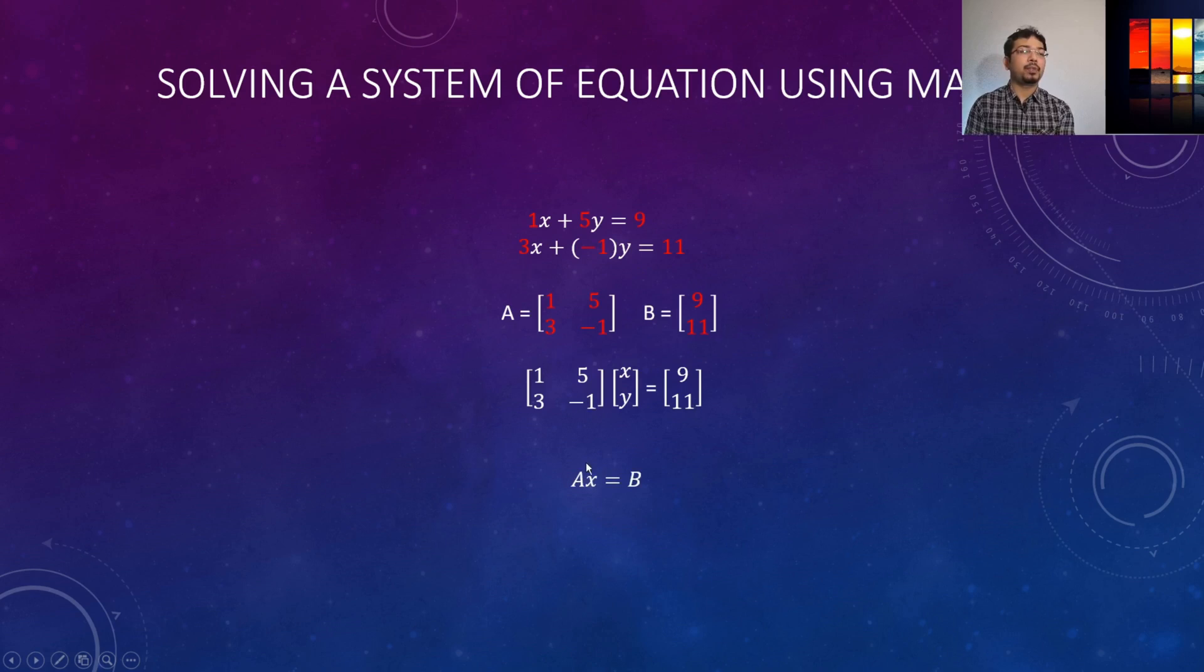Now if we write it in an equation format this is Ax equals to B, we have to solve this equation by solving x in MATLAB. So here A is the matrix, x is the vector that contains x and y elements, and b is the column vector that contains the 9 and 11.